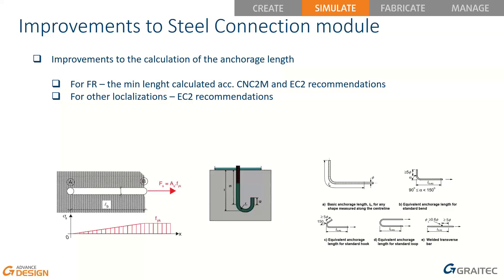For base plate joints in the steel connection module, the anchorage length calculation has been updated. For the French localization with the French design annex selected, the anchorage length is now computed according to both Eurocode 2 recommendations and CNAB 2M recommendations, and the smallest of the two values is used to compute bond resistance. For other localizations, Eurocode 2 recommendations are used. Several related improvements and new warnings have also been added.